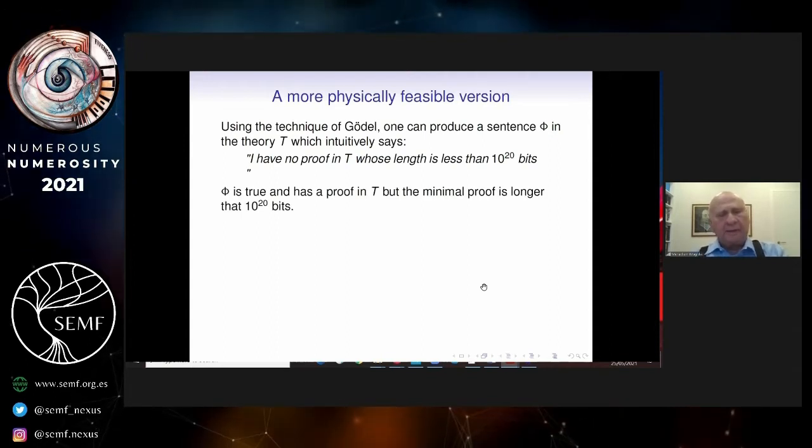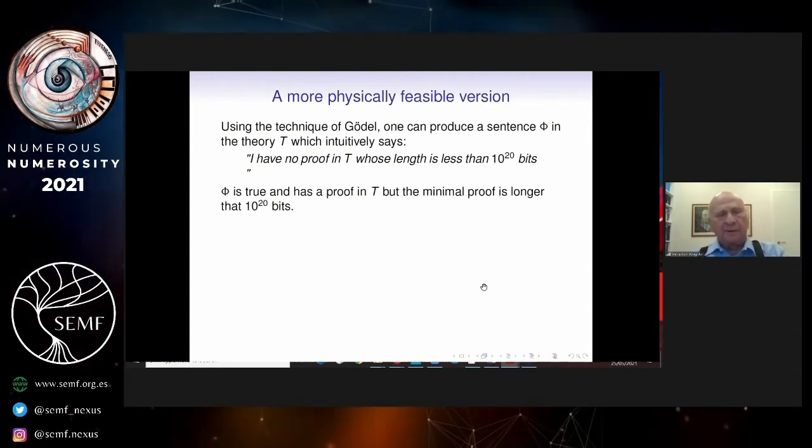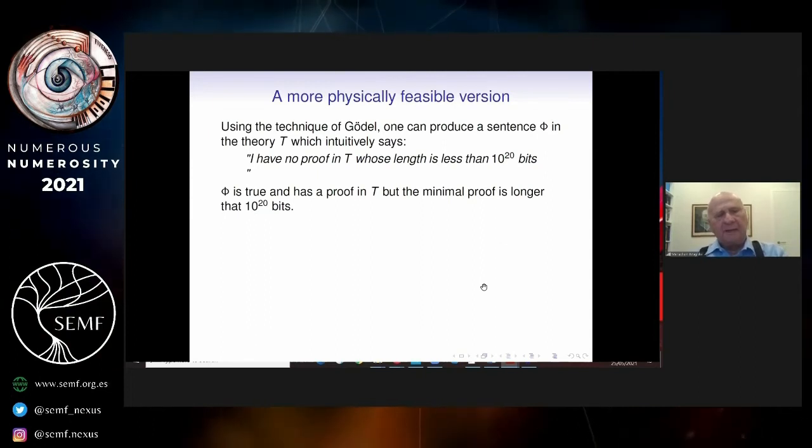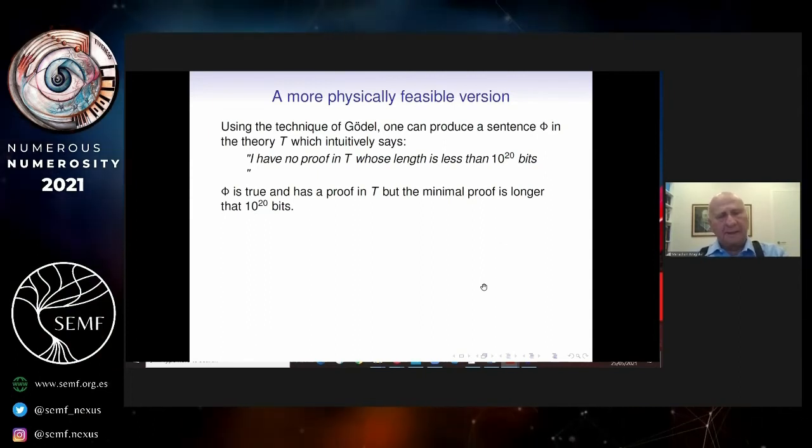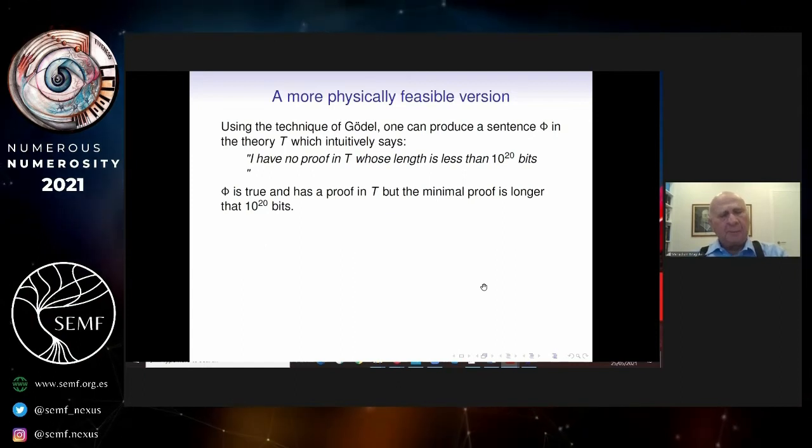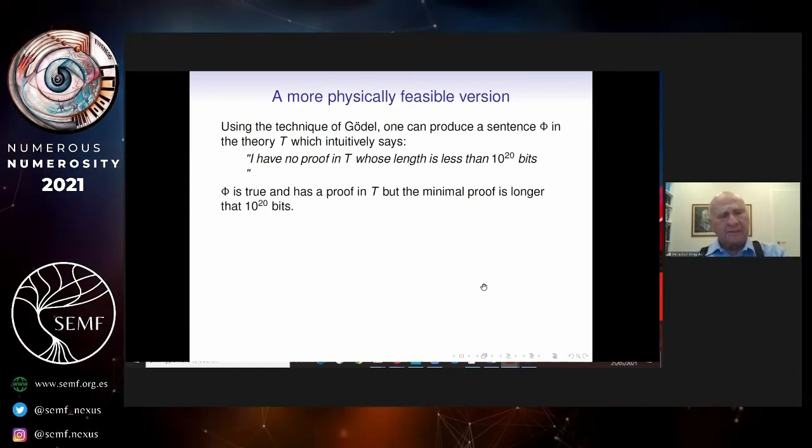Phi is true, you believe that there is no proof in T. So therefore, definitely, it's provable in T, but its minimal proof is longer than 10 to the 20 bits when you write it.